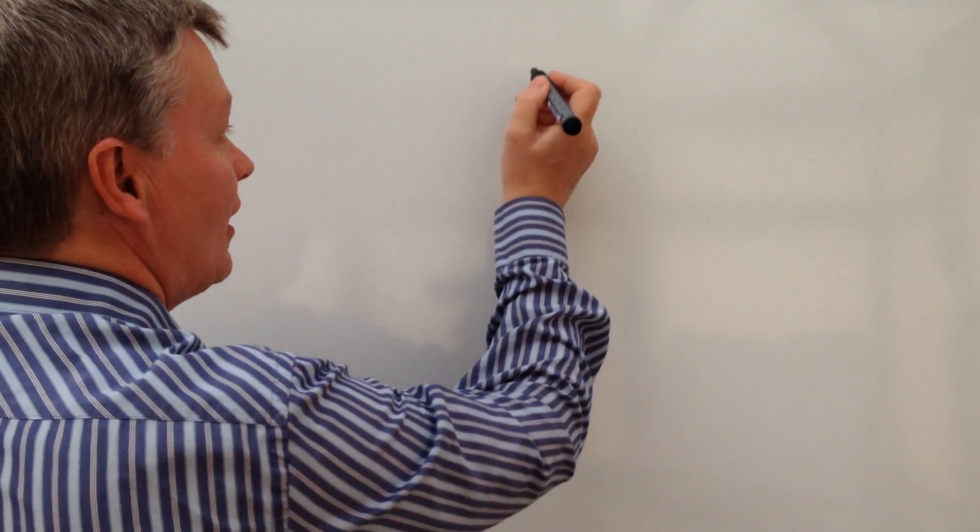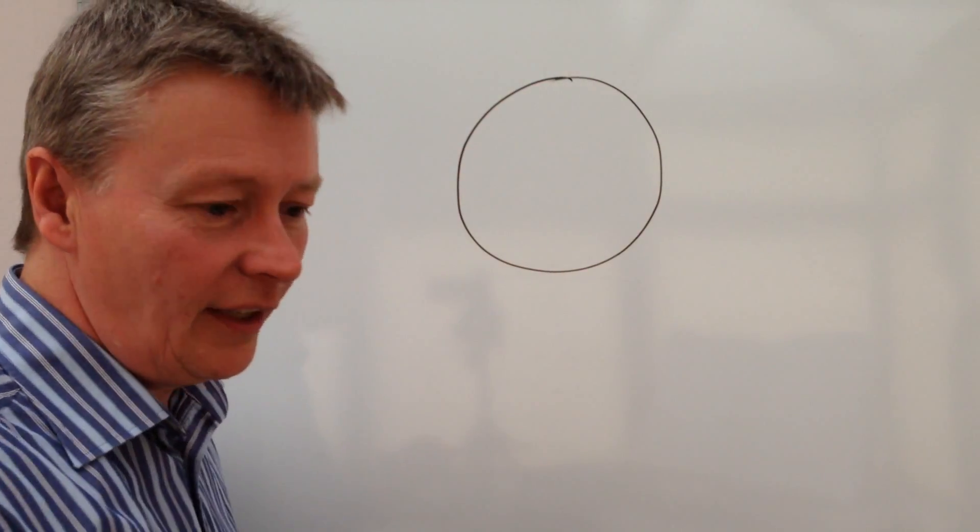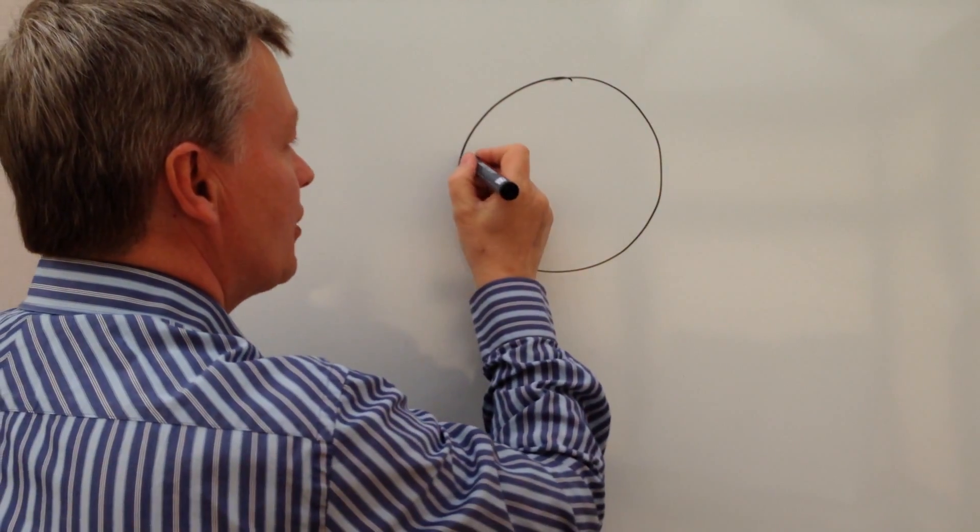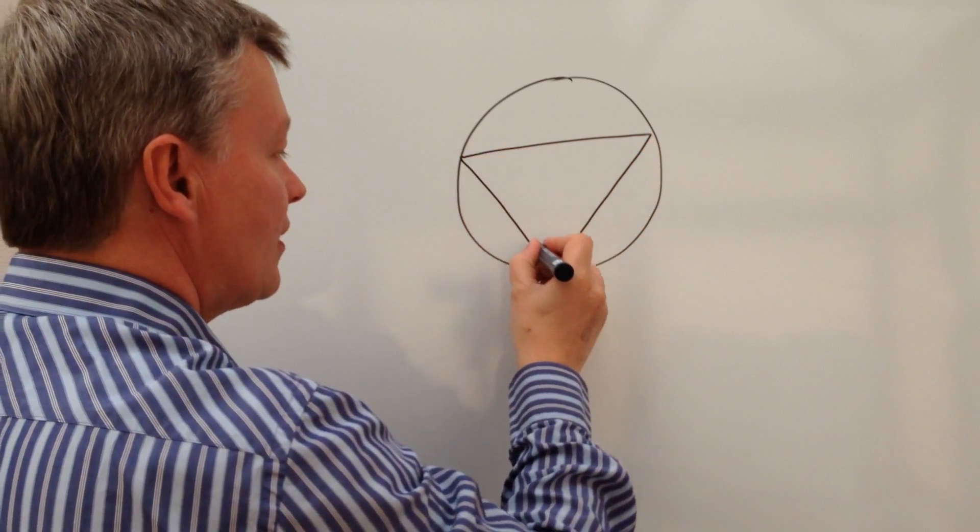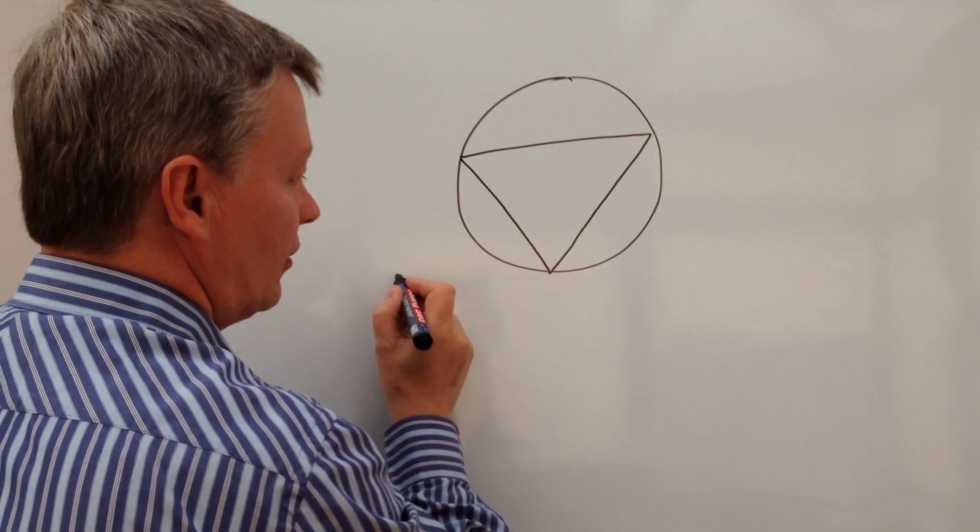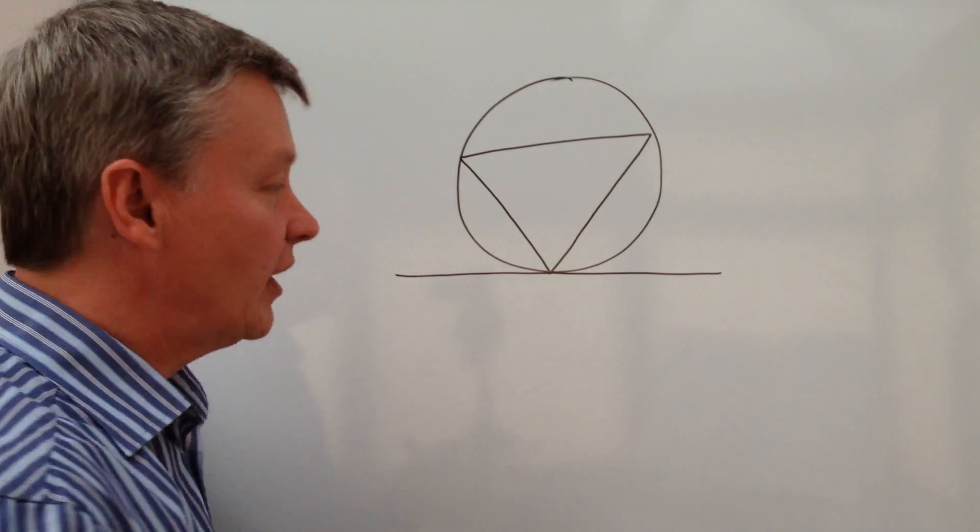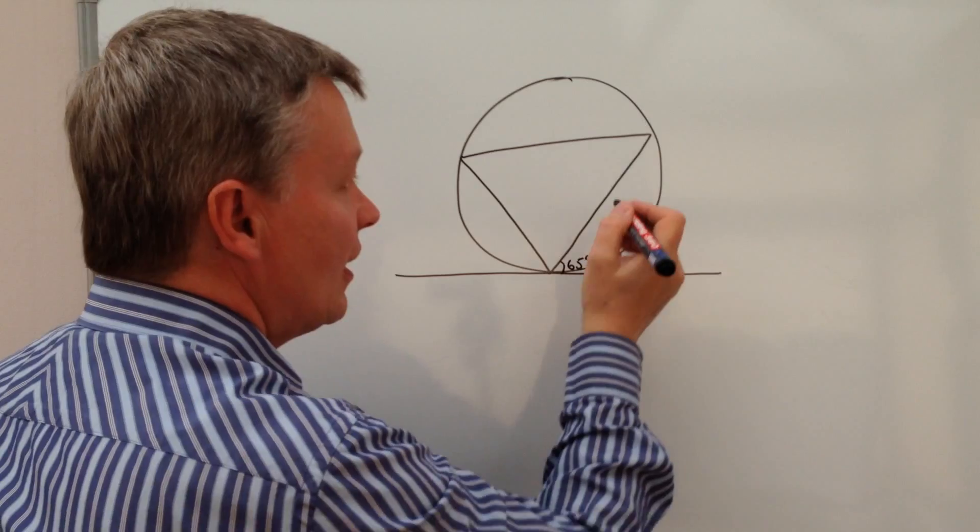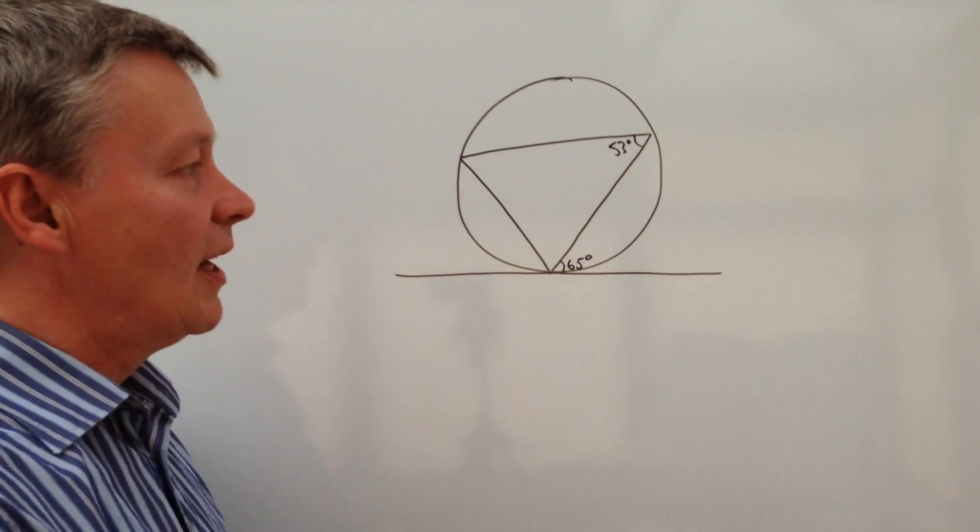This particular question is pitched at A-star GCSE level. What you're given is only some fairly small bits of information: you've got a circle with a triangle in it, and also to this triangle there's actually a tangent.